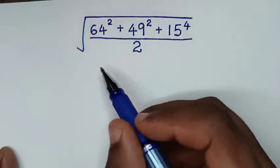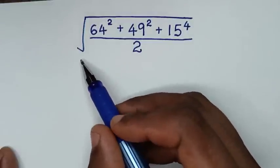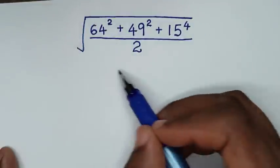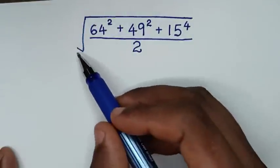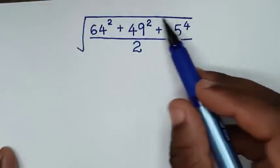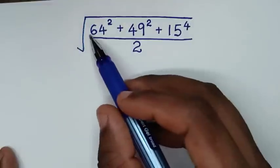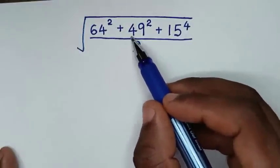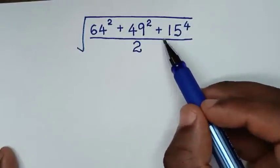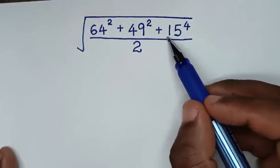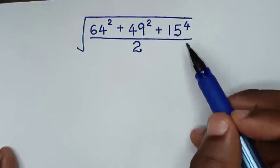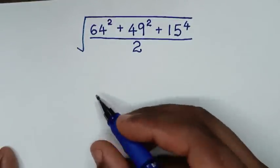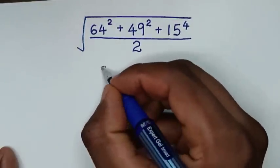Hello, you are welcome to solve this math problem: find the value of square root of 64 squared plus 49 squared plus 15 to the power 4 over 2.